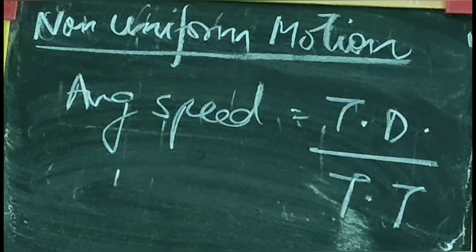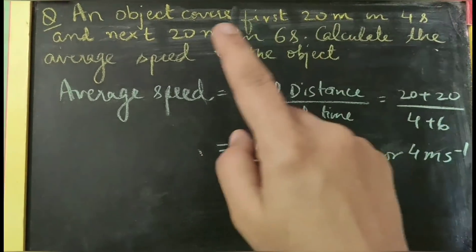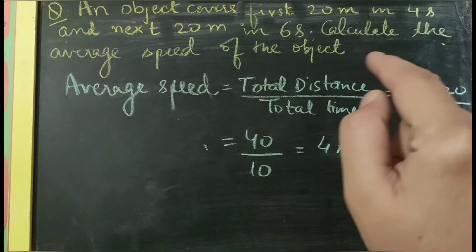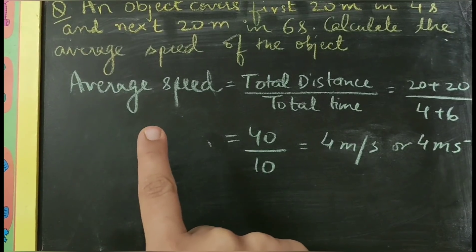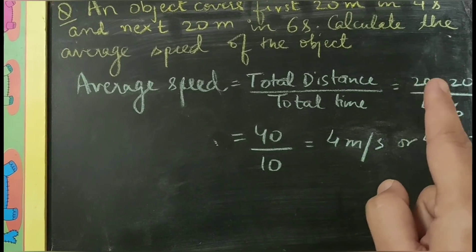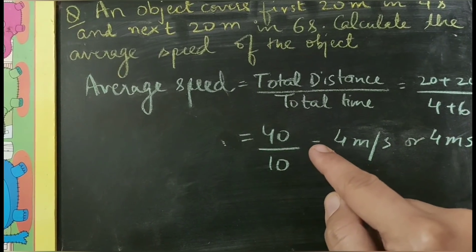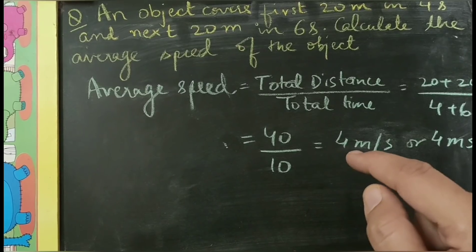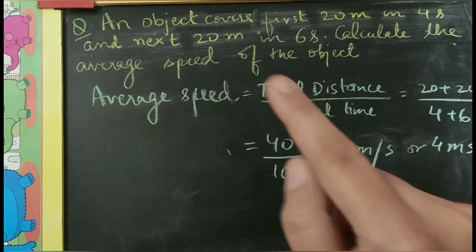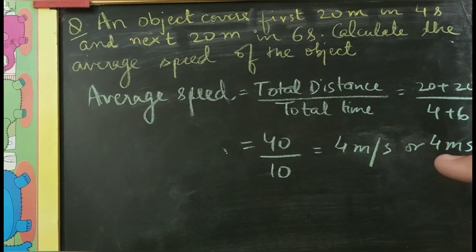Let us do a numerical on average speed. An object covers 20 meters in 4 seconds and the next 20 meters in 6 seconds. Calculate the average speed. The formula for average speed is total distance upon total time. Total distance is 20 plus 20, that is 40 meters. Total time is 4 plus 6, that is 10 seconds. Average speed comes out to be 4 meters per second.